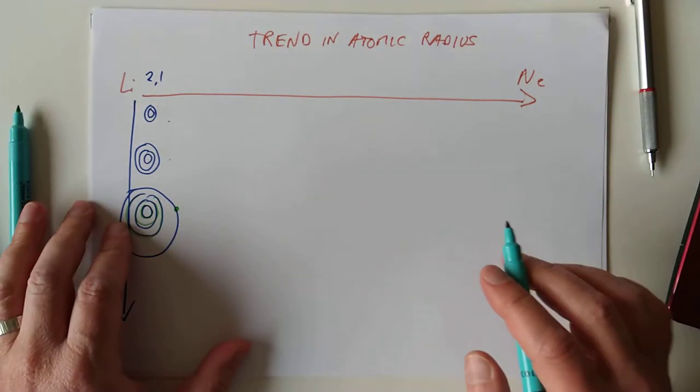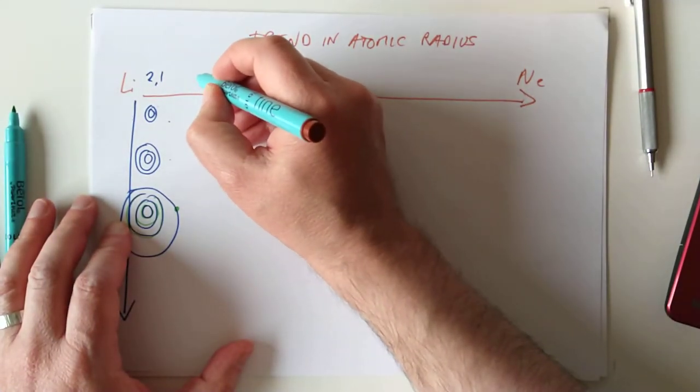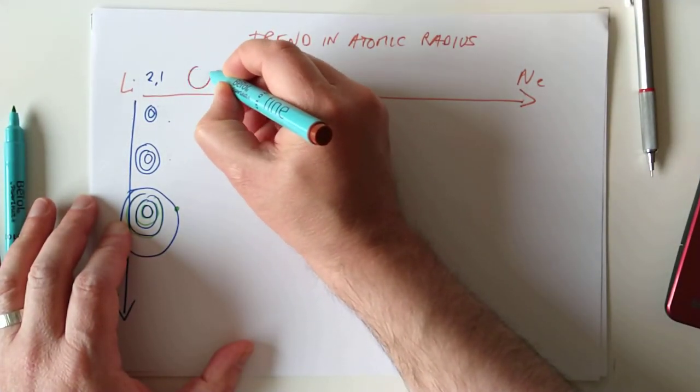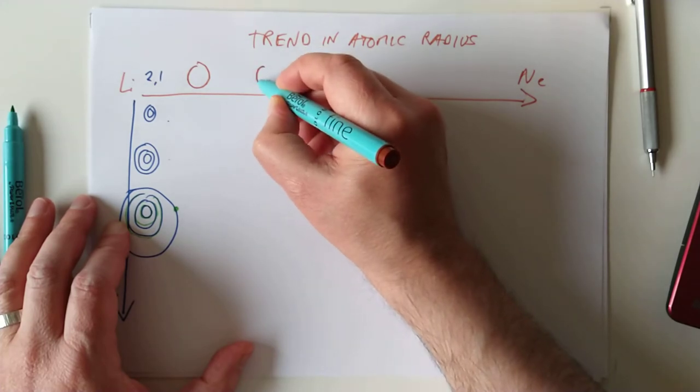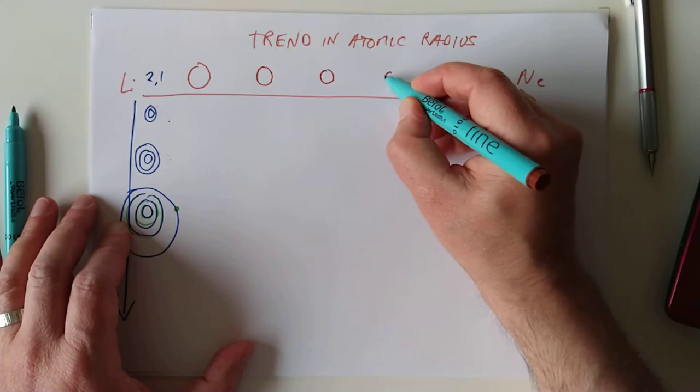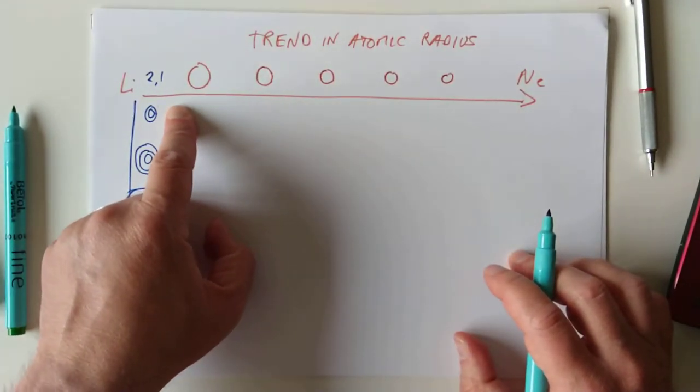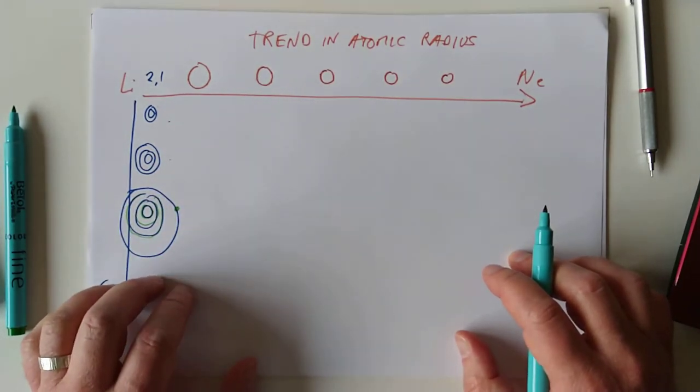Trend going across the way is slightly counterintuitive, because it turns out, if I was to draw it approximately to scale, then if we start here, then we find ourselves getting ever so slightly smaller as we go across. Now, what's going on there? Why is that? Very simple reason for that.